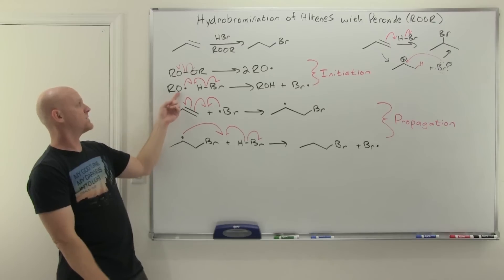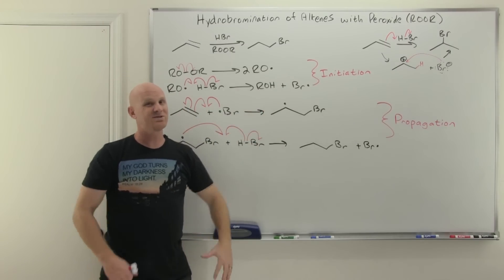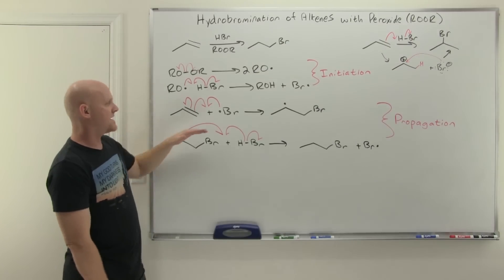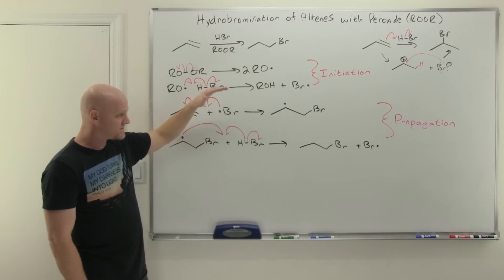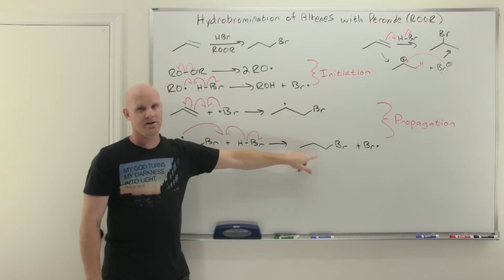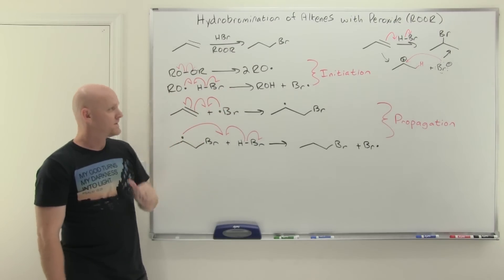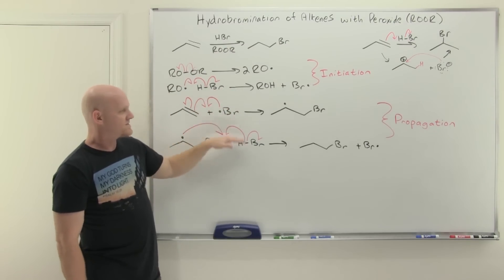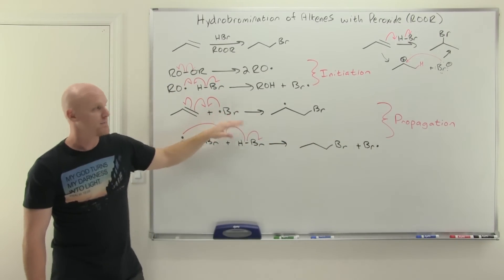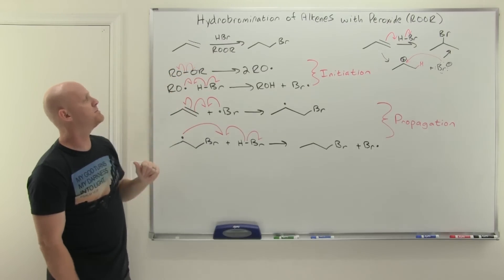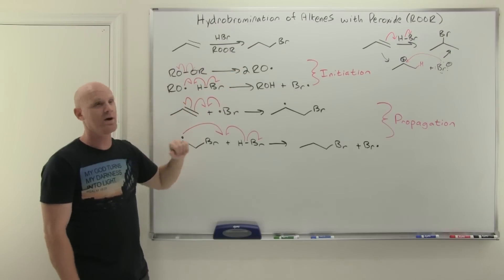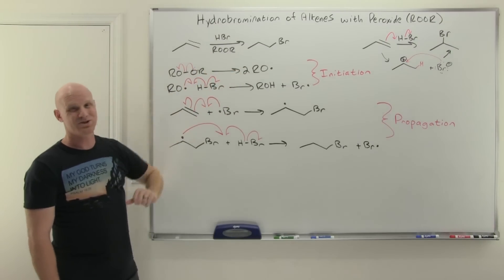Notice the second initiation step: you start with one radical and end up with one radical, so you might think it's a propagation step. But the propagation steps are the sequence of two steps that repeat over and over to create the desired product — and we're not creating our desired product here. These two initiation steps together are how we get the first bromine radical we need to get the propagation cycle going.